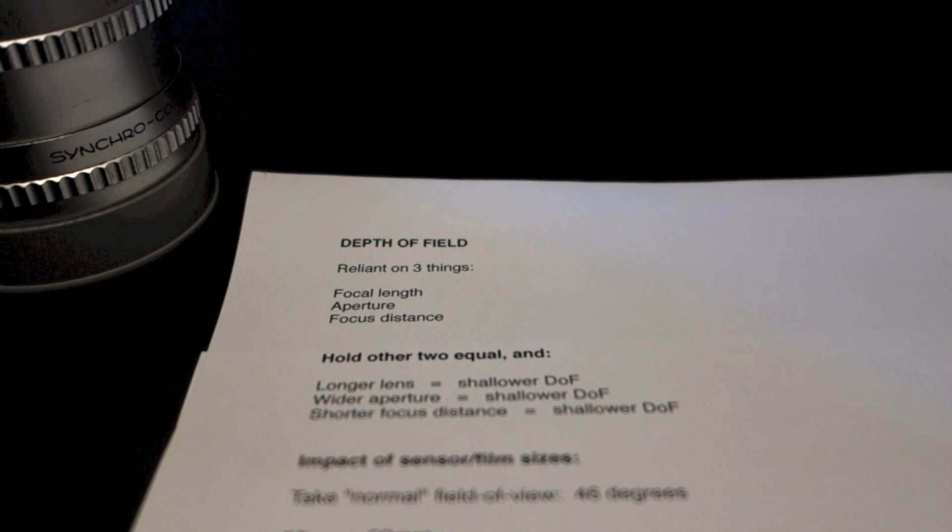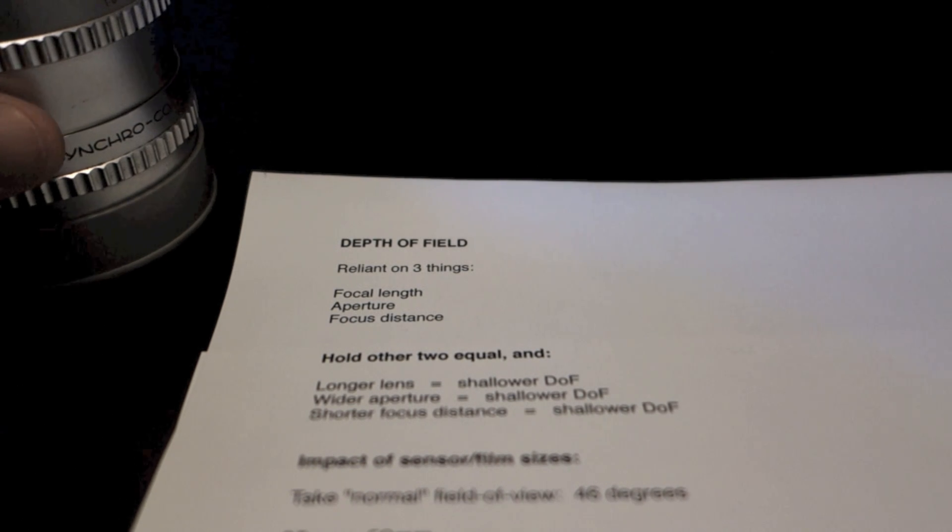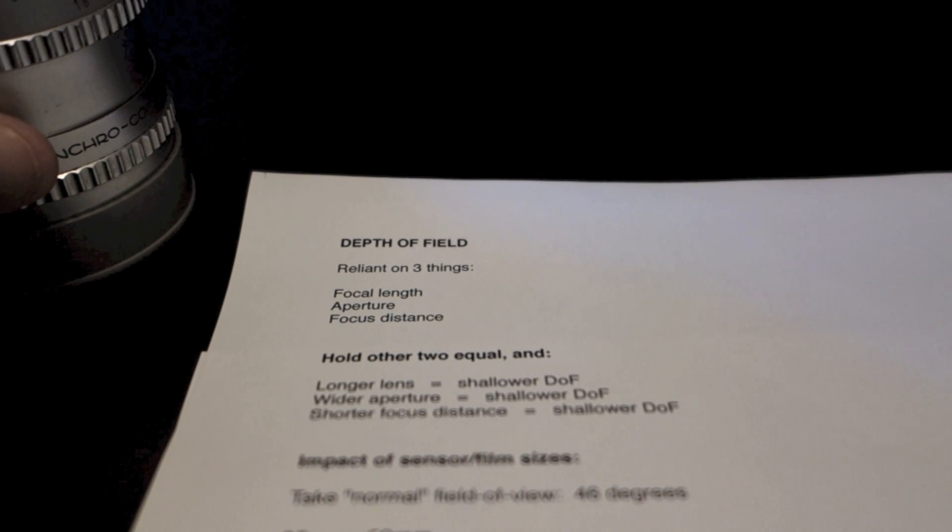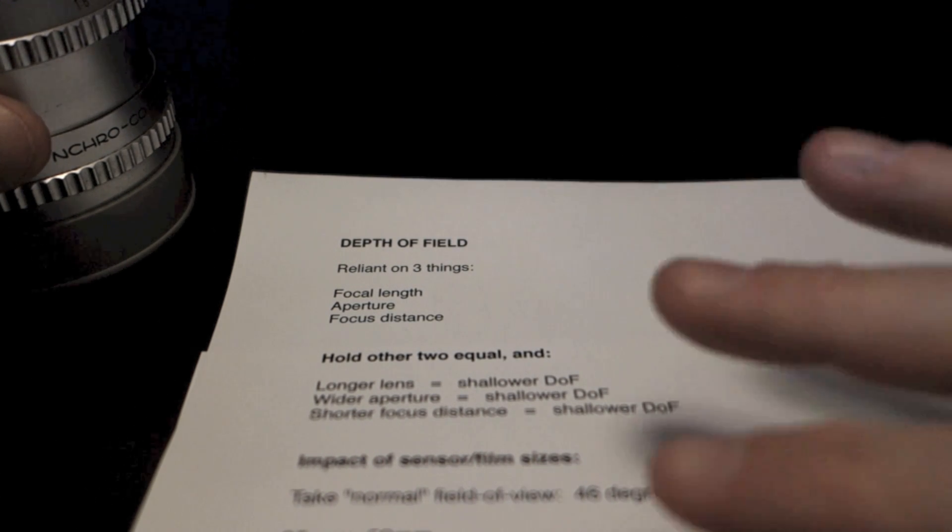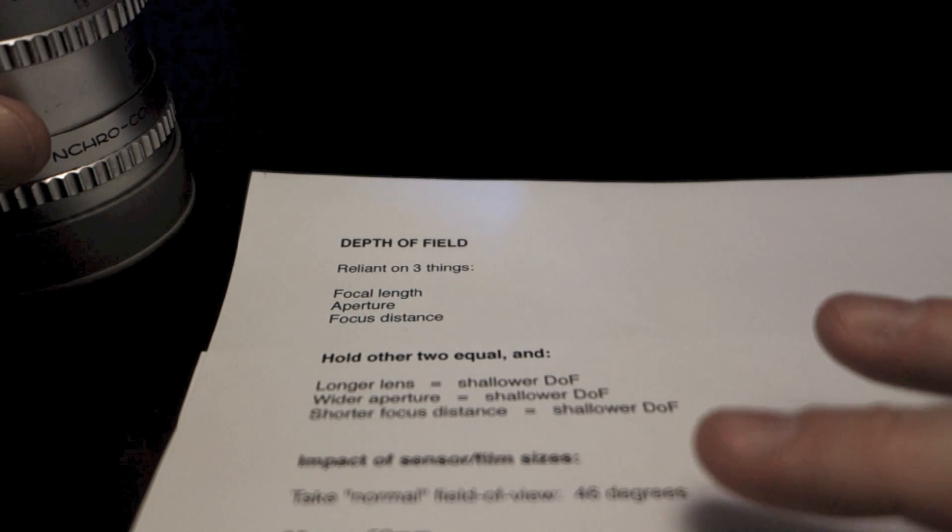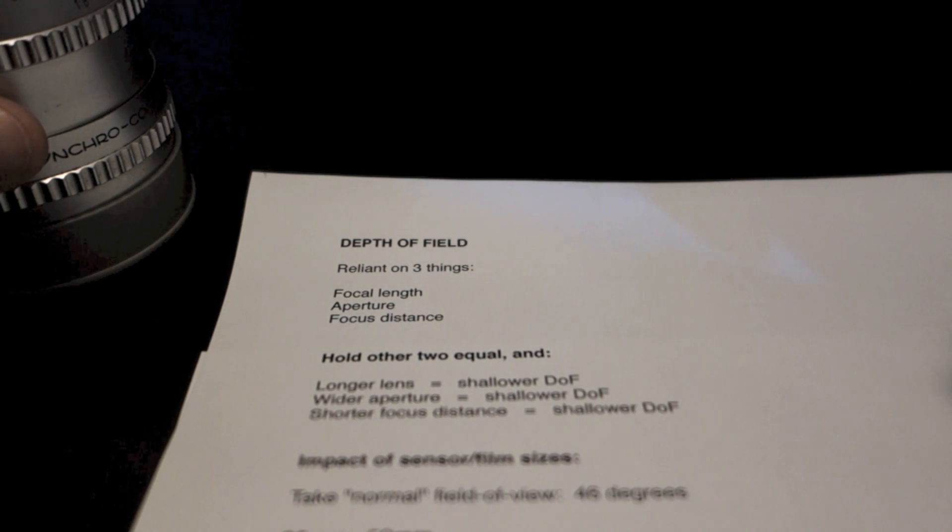It doesn't matter. These three things are independent of the size of film that you're using, or the size of the sensor you're using. A 500mm lens is a 500mm lens. So keep that in mind. We'll get into the other relationship in a moment. But for now, let's just stick with that depth of field is based only on focal length, aperture, and focus distance.